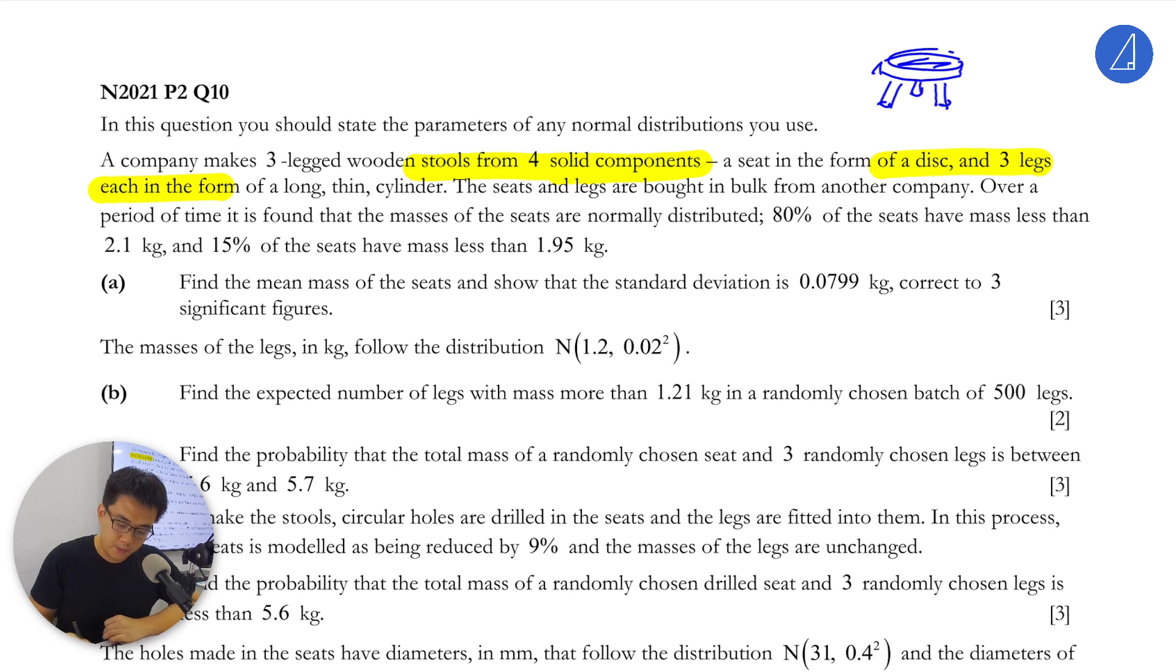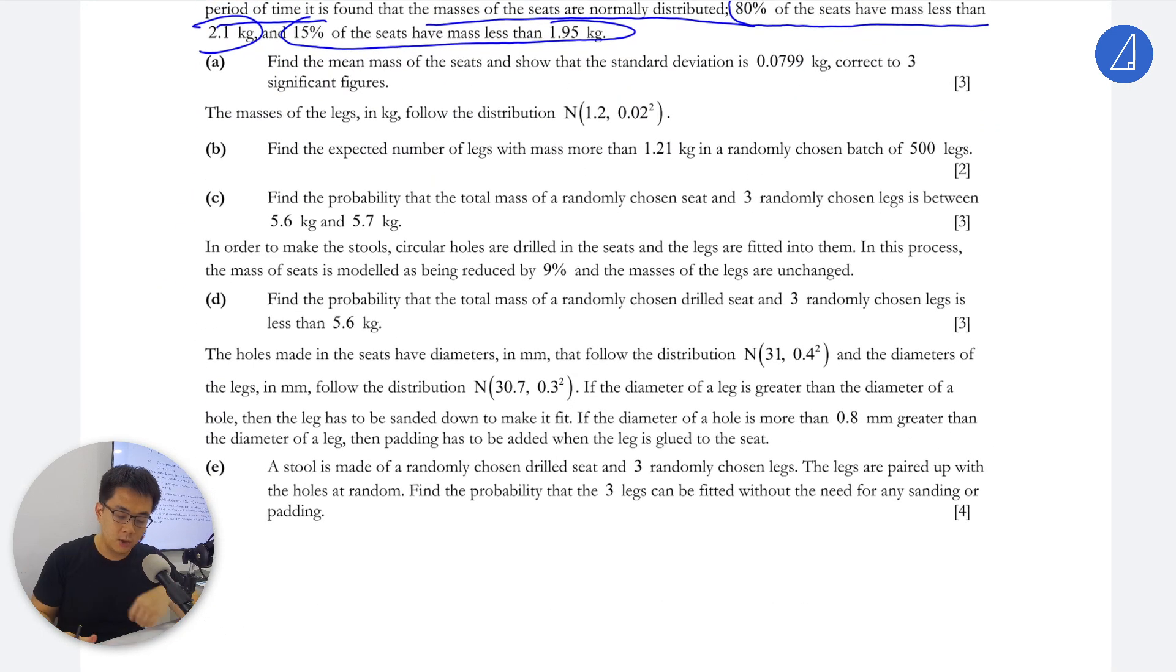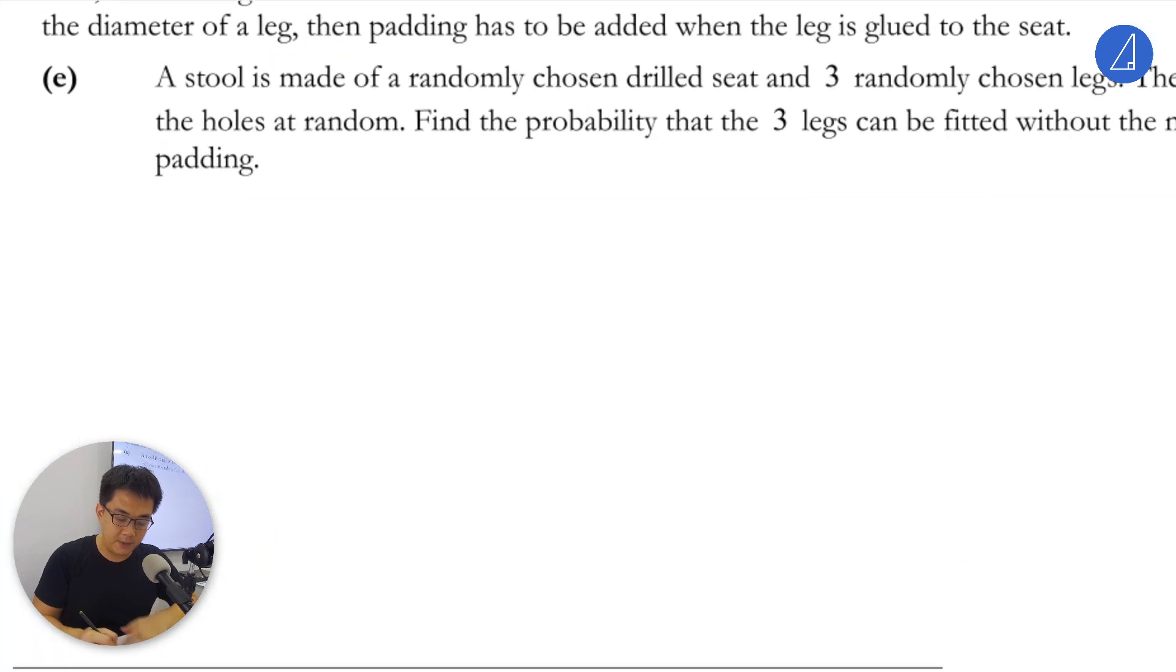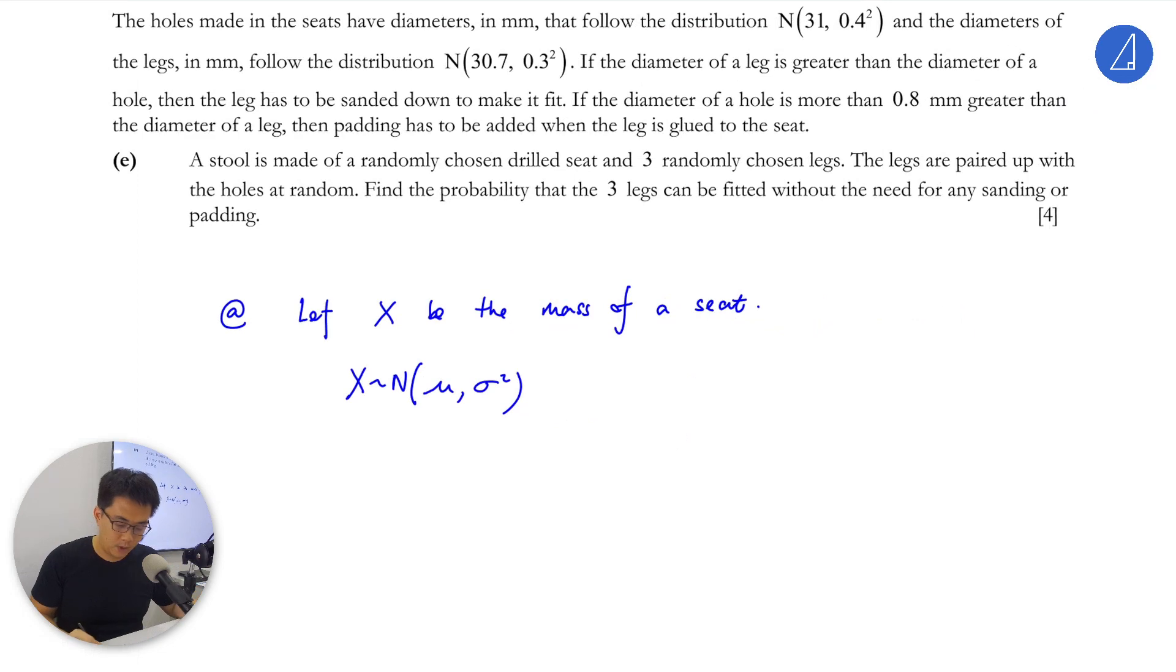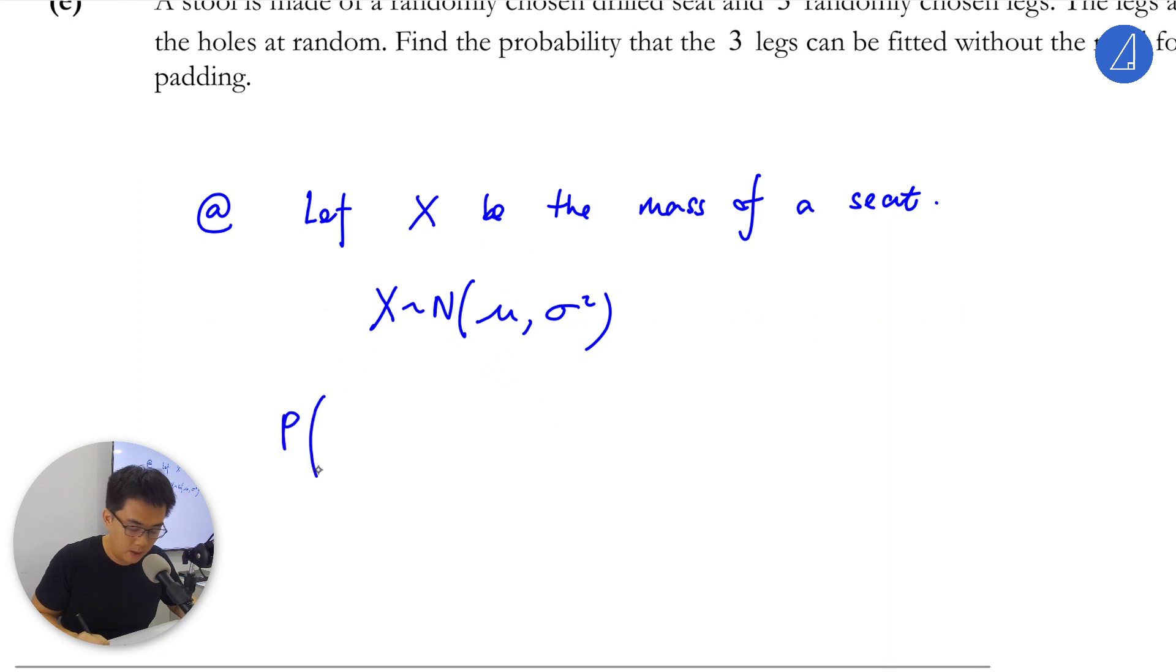The seeds and legs, over a period of time, found that the masses of the seeds are normally distributed. 80% of the seeds have mass less than 2.1 kg and 15% of seeds have mass less than 1.95 kg. We need to define everything. Let X be the mass of a seed with mean mu and variance sigma squared. Everything is in kg. So P(X < 2.1) = 0.8 and P(X < 1.95) = 0.15.